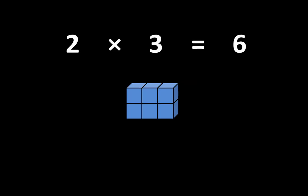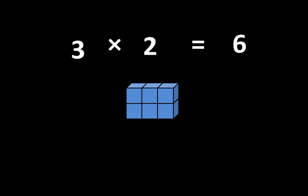Here's a group of 6. This is one group of 6. We can break this apart into two groups of 3, or we can break this apart into three groups of 2. Either way, the total is still 6. So we can write 2 times 3 is equal to 6, or we could also write that 3 times 2 is equal to 6.